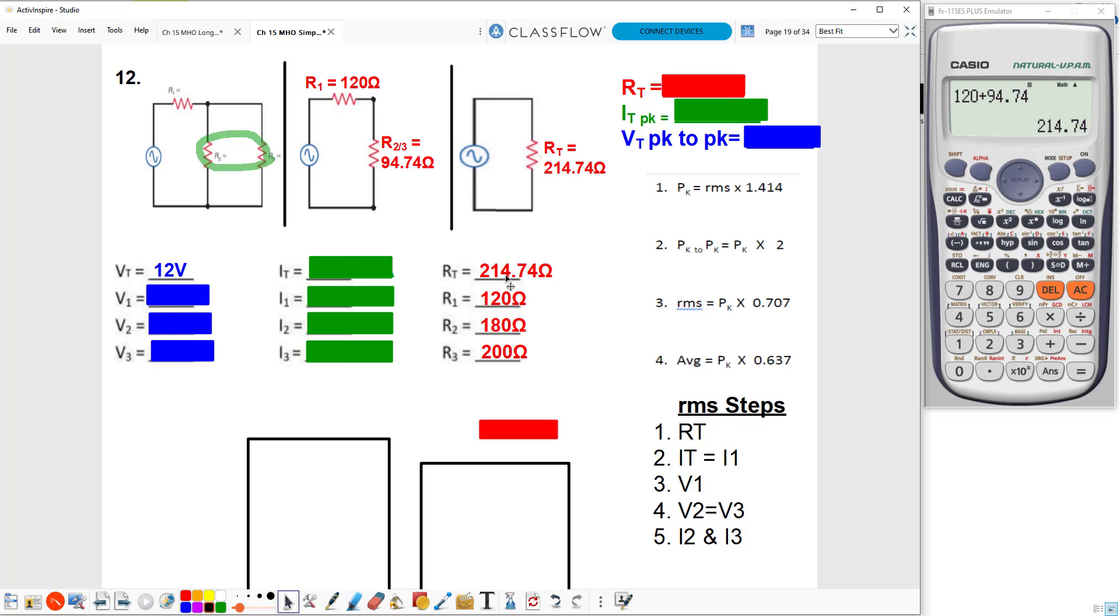Now that I've got two out of three, I can find the value of IT. IT would be equal to the 12 volts of VT over the 214.74 ohms of RT, giving me a total current of 55.88 milliamps.